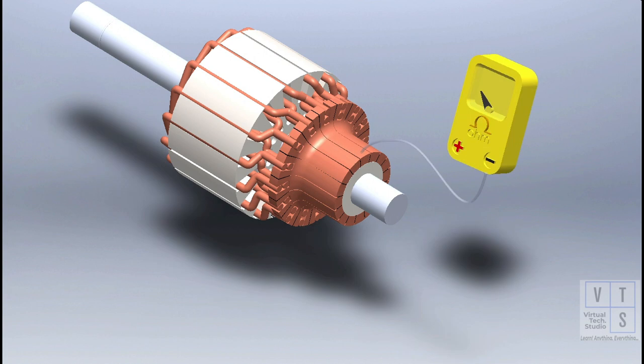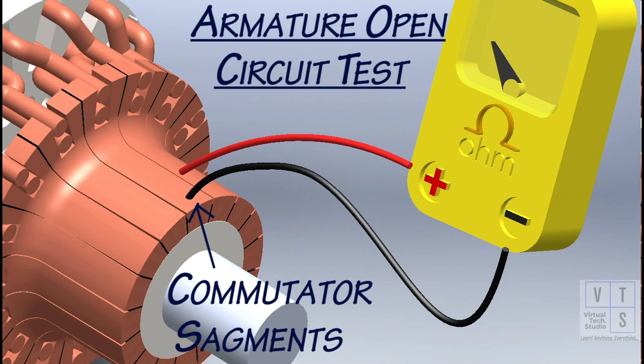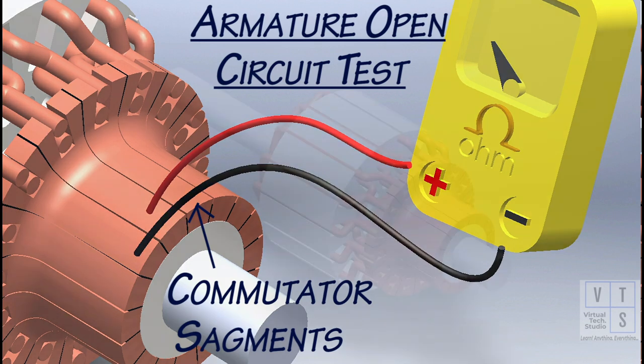Check for continuity between consecutive commutator segments. If there is no continuity at any test point, there is an open circuit and the whole armature is to be replaced.